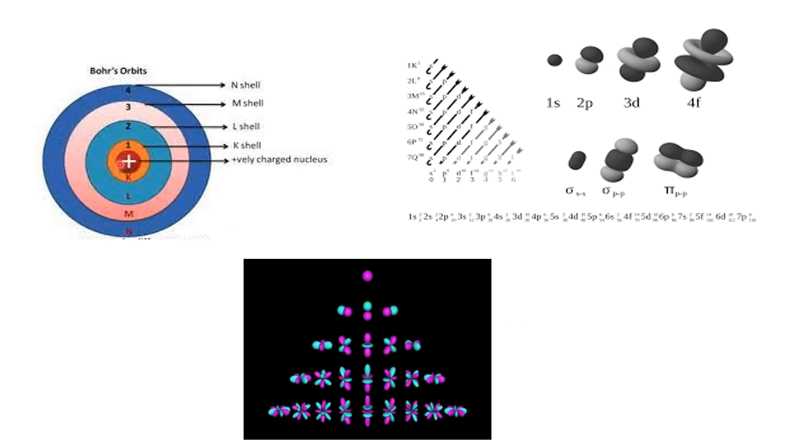So in this diagram you can see these are Bohr orbitals. They are circular in shape. They represent 2D motion of electrons. While these are orbitals. They are basically regions in space where probability of finding of electron is maximum, and they represent motion of electrons in three dimensions.